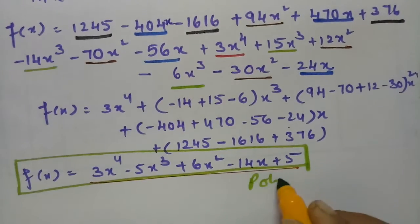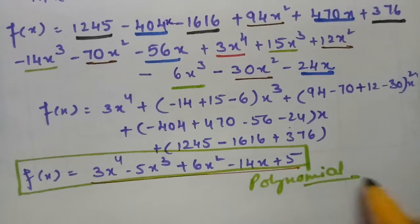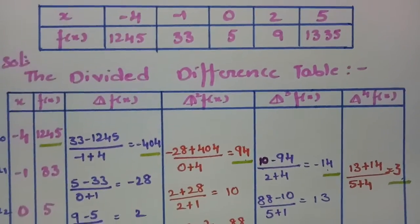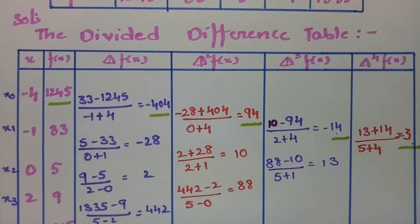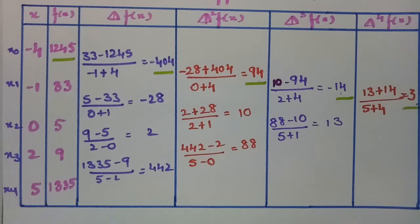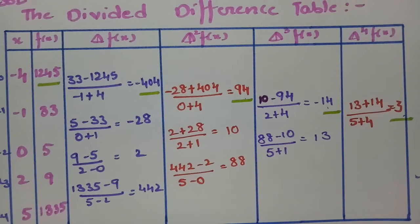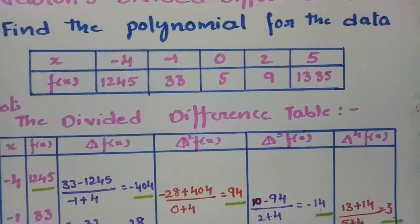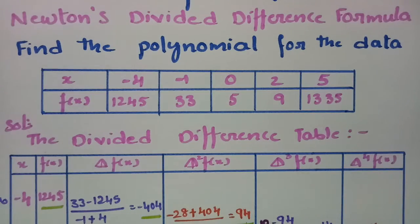This is the required polynomial obtained using the Newton divided difference formula. Thank you for watching. If you follow these steps — hide one step at a time and divide — that is the main logic in the divided difference table. Please practice so you can solve it on your own. Thank you for staying till the end.